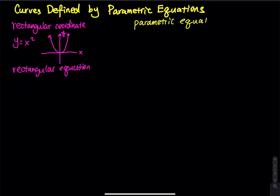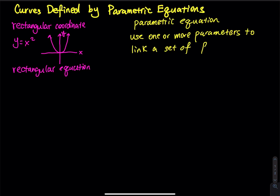We are no longer dealing with rectangular equations. A parametric equation uses one or more parameters to link a set of functions. The parameter I am going to use is t.